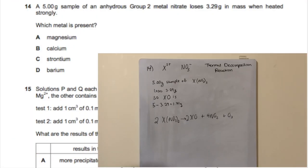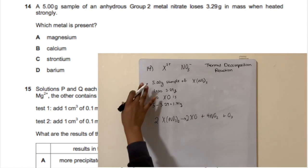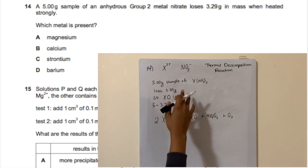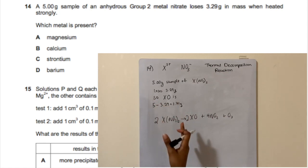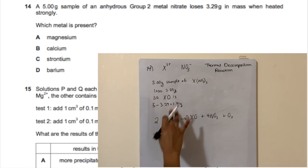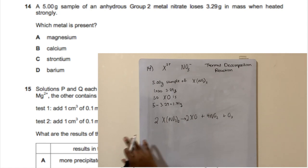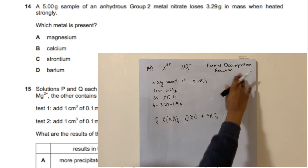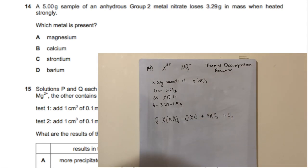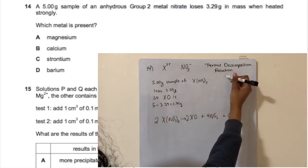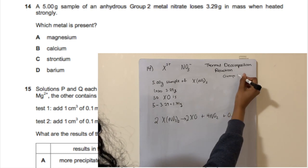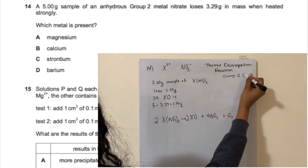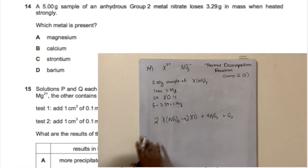For question 14, we need to identify the group 2 metal in a metal nitrate. We have a 5-gram sample that loses 3.29 grams, leaving 1.71 grams of metal oxide. The relevant equation is the thermal decomposition of a group 2 metal nitrate — you should also know the equivalent for group 1 metals.